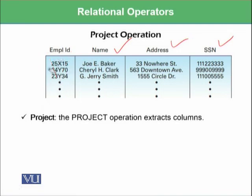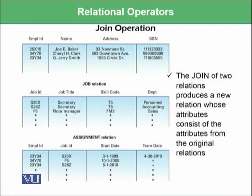So whatever limited number of columns you want from this relation, you can perform the project operation. Then there is another operation known as the join operation. The join operation tries to join different relations — two or more relations — and produces a new relation whose attributes consist of the attributes from the original relations.